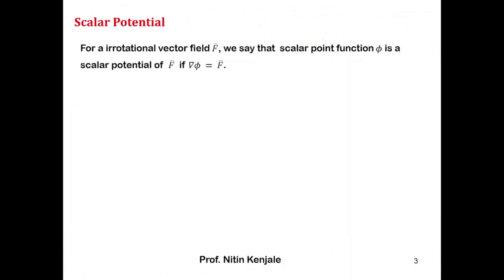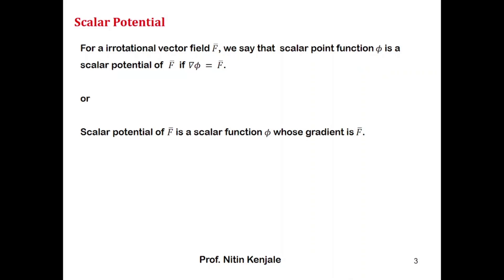For an irrotational vector field f bar, we say that the scalar point function phi is a scalar potential of f bar if its gradient is equal to f bar. A scalar potential of f bar is a scalar function phi whose gradient is f bar.